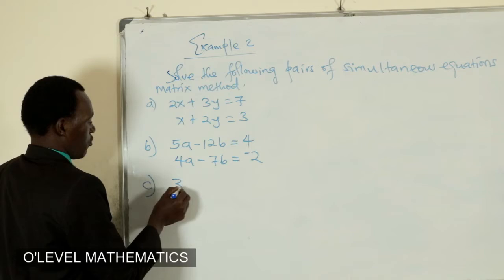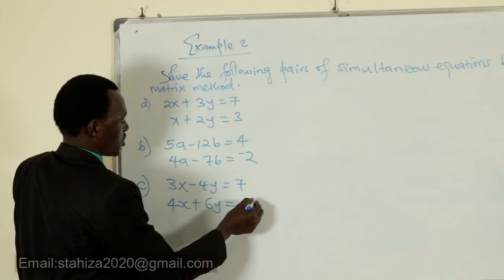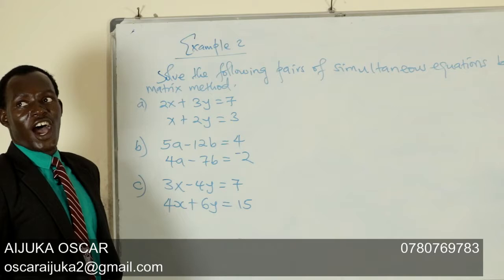And C should be 3x minus 4y is equal to 7 and 4x plus 6y is equal to 15. As our word is done, I will answer part A and you will answer the rest.